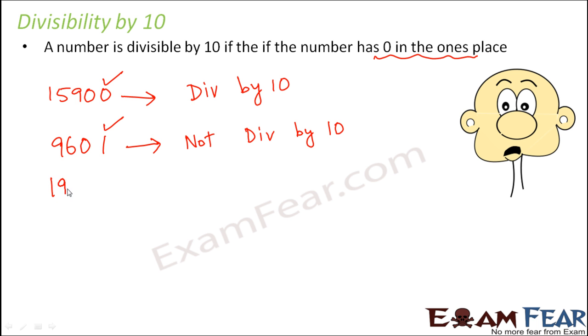So there has to be a 0 at the last place. You talk about an example like this, 1980000. Again, there is a 0 at the unit space. So this is also divisible by 10.